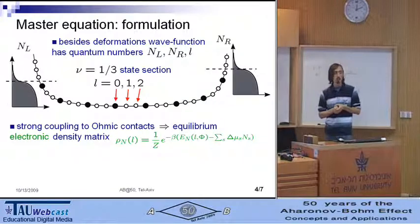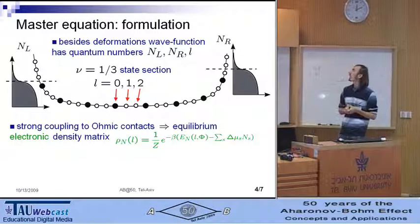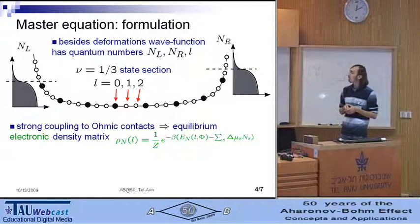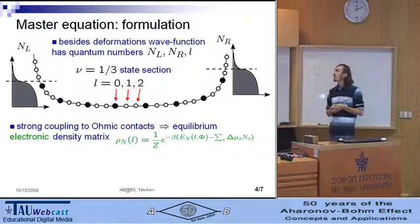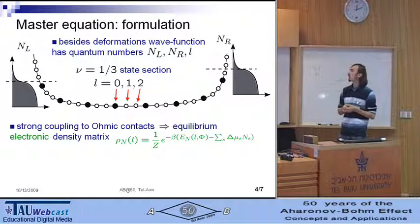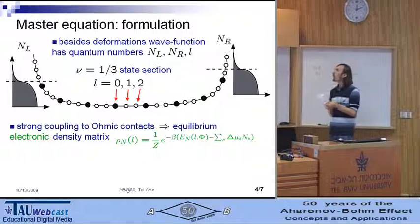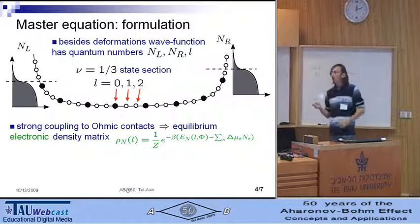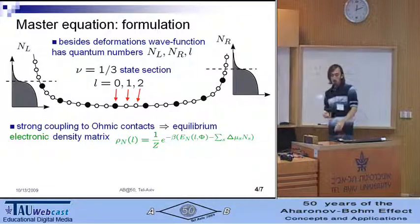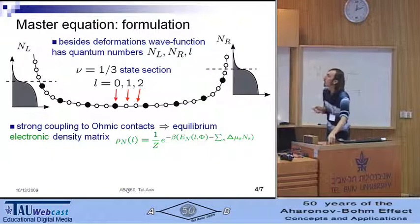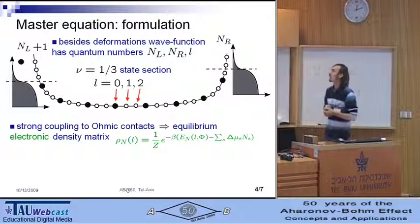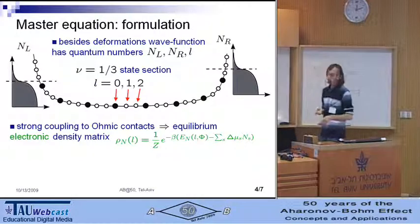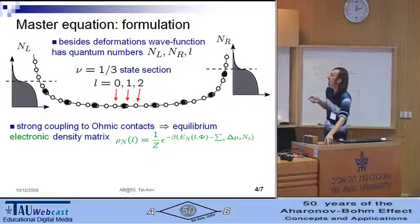To do so, we recall that besides the deformations, the wave function has quantum numbers such as a number of electrons on inner and the outer edge of the interferometer, and the number of quasiparticles L in the interferometer. The number of electrons is changed due to tunneling from and to the ohmic contacts. While the number of quasiparticles changes due to tunneling in the quantum point contacts from inner edge to the outer and back.